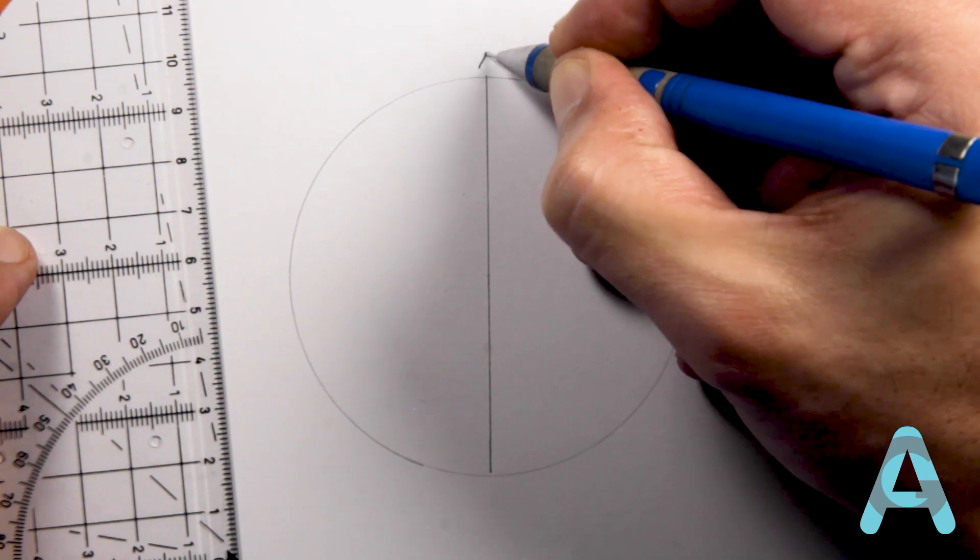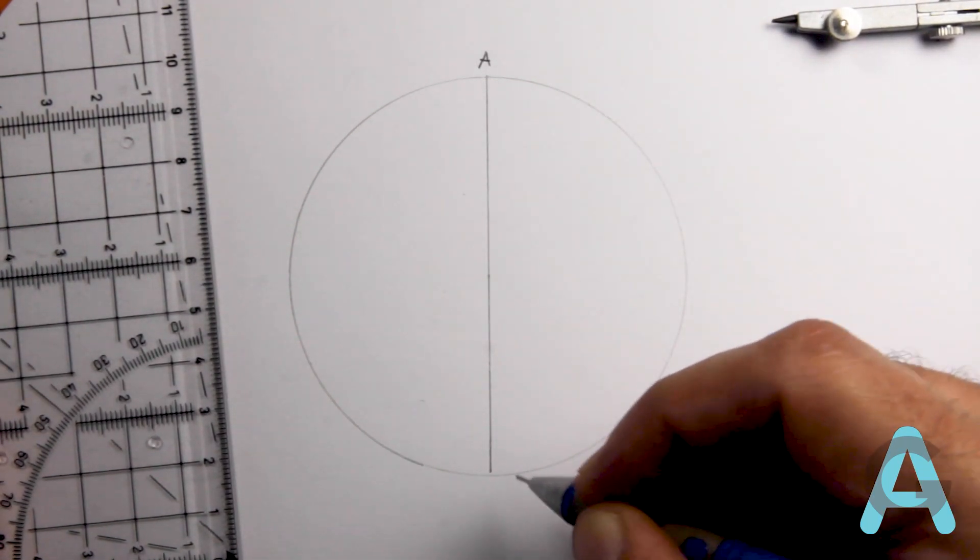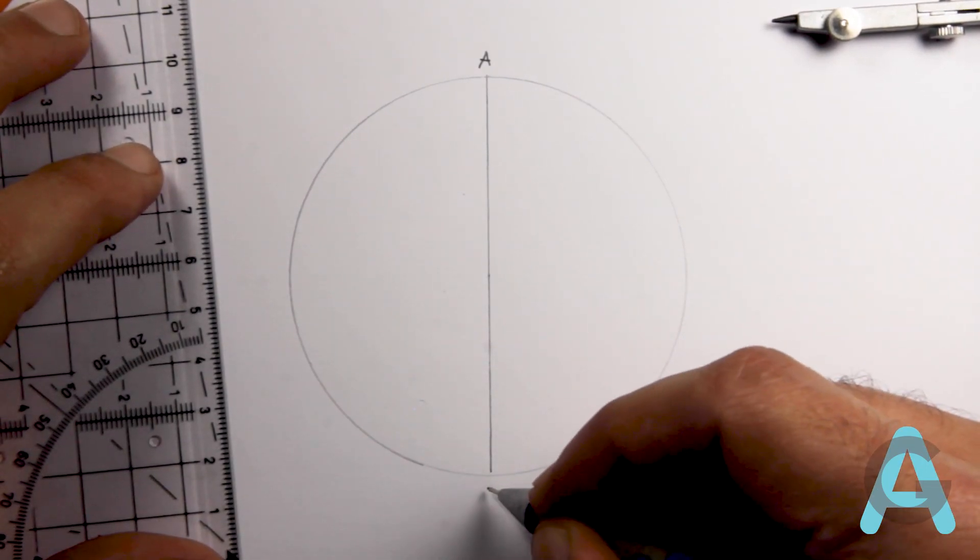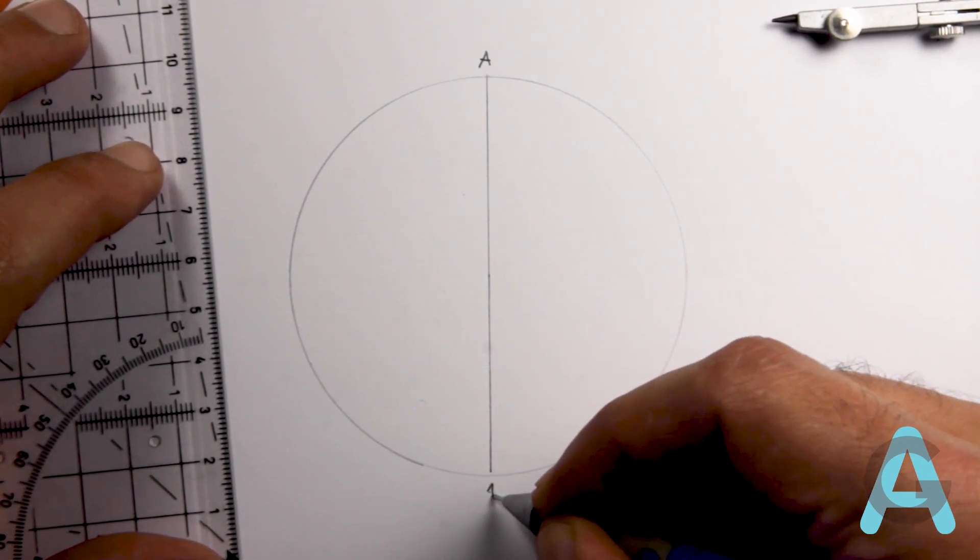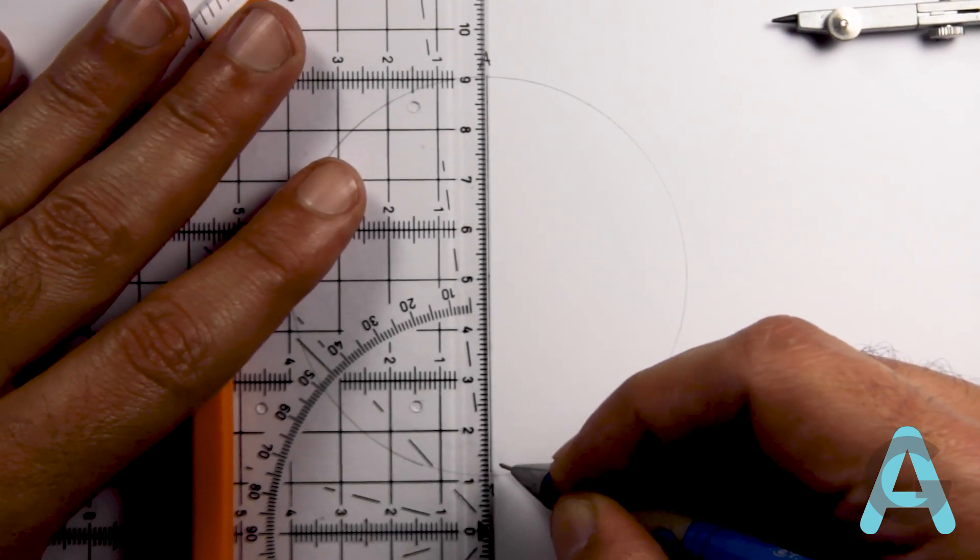The upper side we'll call it A and the downside we'll call it 1. The number 1 point will be the center of the next operation.